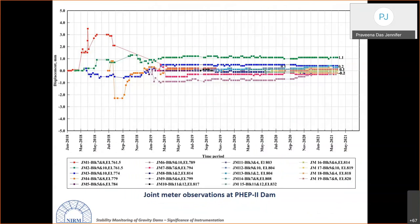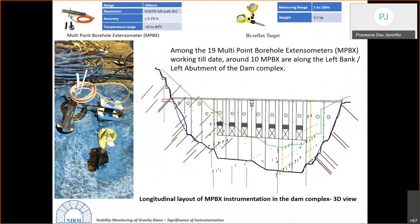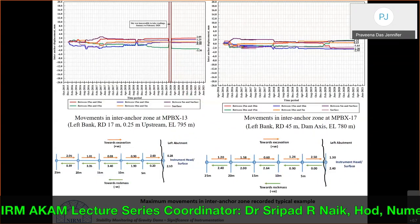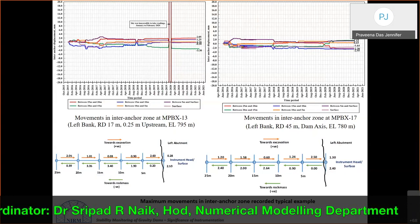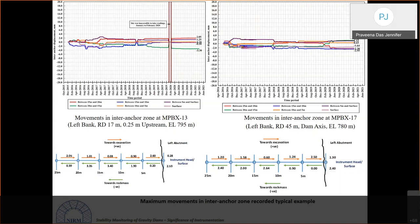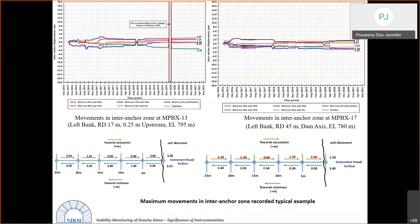MPBX extensometers installed at the left and right abutments and at the bottom measure changes within the rock mass, including upward, downward, and compressive movements in slopes and abutments. Current readings during construction show a maximum of only 2 mm of movement — compressive strain of -3 and tensile of +2 — indicating negligible deformation.